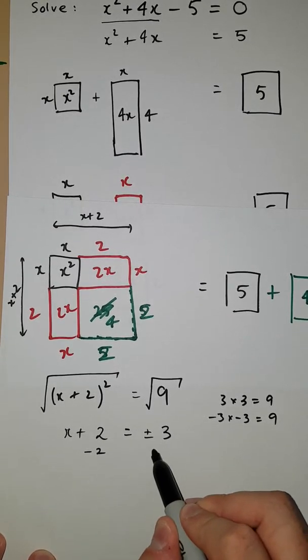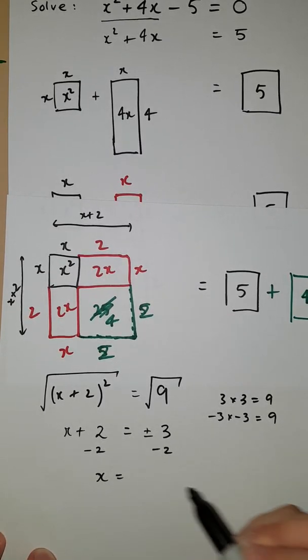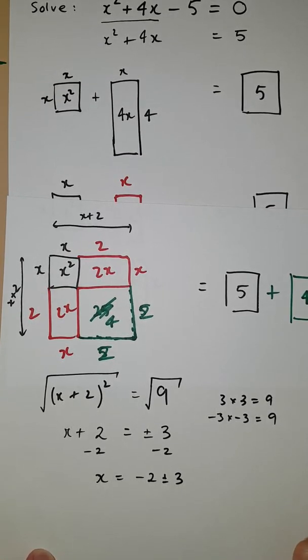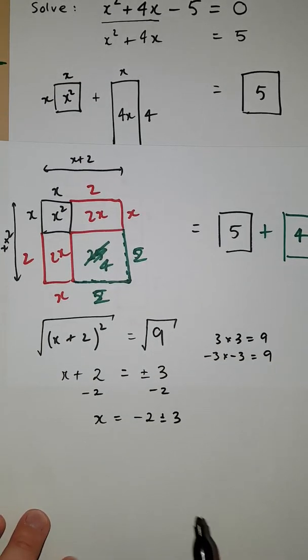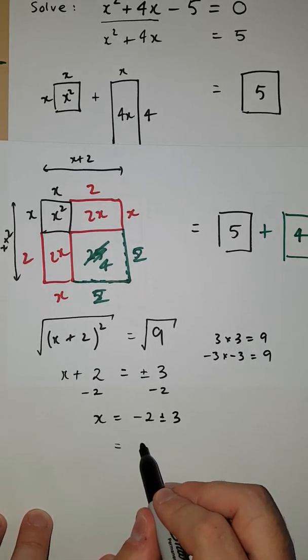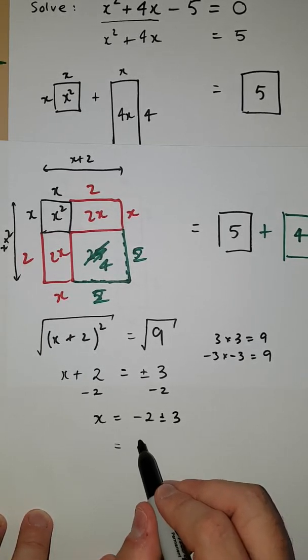Then we subtract the 2 from both sides. We're left with x = -2 ± 3, which is going to be two different solutions. So one of them is going to be -2 + 3, which gives us 1.